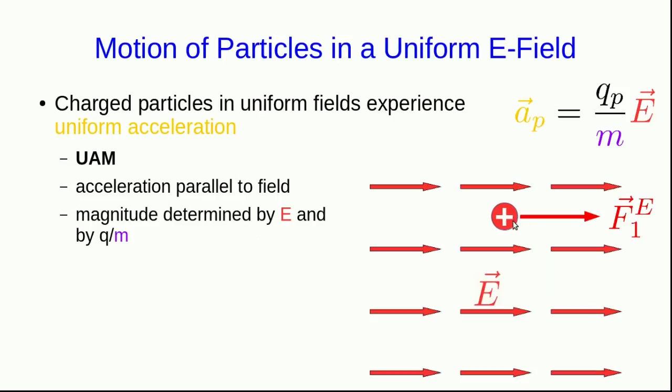If a particle is released from rest, or if it starts off moving parallel to the field, then we'll have nice one dimensional uniformly accelerated motion. But if it starts off moving at any angle to the field, then the motion is going to be parabolic. That's exactly like what we saw for a projectile in Physics 1104, and the physics is fundamentally the same.